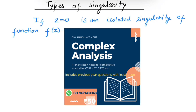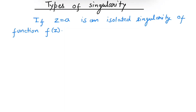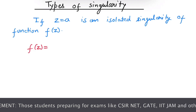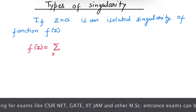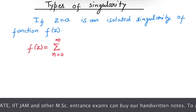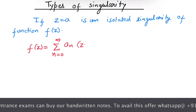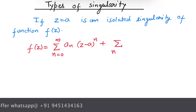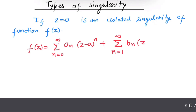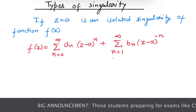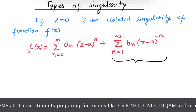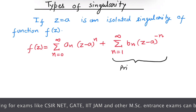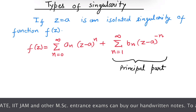Suppose the Laurent expansion of function f of z is: summation n equals 0 to infinity of a_n times (z minus a) raised to power n, plus summation n equals 1 to infinity of b_n times (z minus a) raised to power minus n. This part with negative powers of (z minus a) is known as the principal part. This principal part decides the type of singularity.